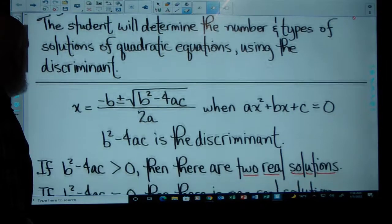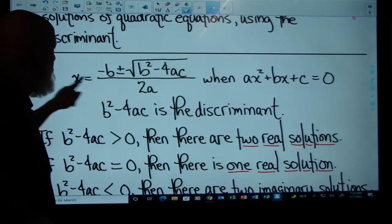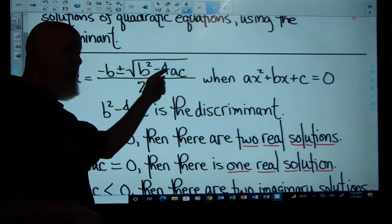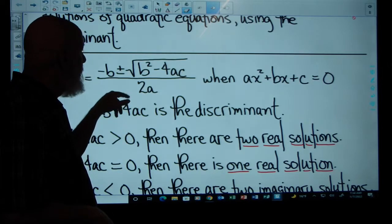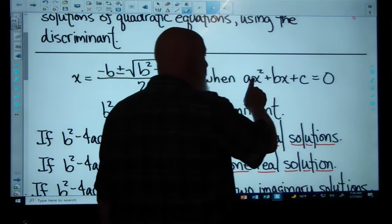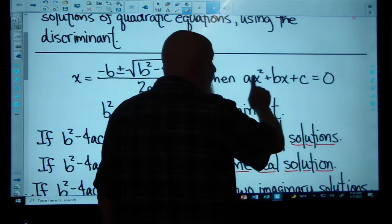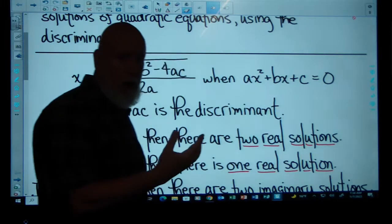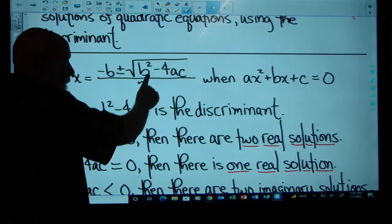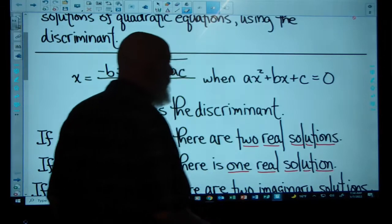The discriminant is part of the quadratic formula. Here's the quadratic formula: X is equal to the opposite of B, plus or minus the square root of B squared minus 4AC, all over 2A. This applies as long as AX squared plus BX plus C is equal to zero, where A, B, and C are real numbers. We plug in A, B, and C into this formula, and that generates the solutions of any given quadratic equation.